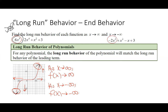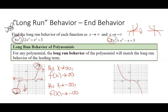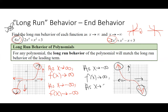For the next one, the leading term is negative, so since it's a cubic it's reflected about the x-axis. As x approaches negative infinity, f(x) approaches positive infinity; and as x approaches infinity, f(x) approaches negative infinity. The order in which you write the two statements doesn't matter.